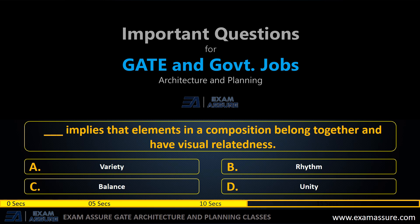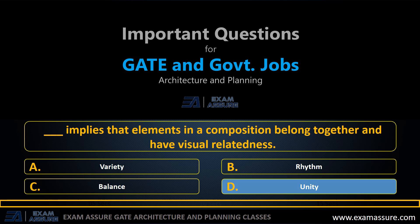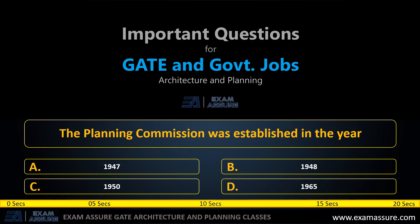Next question: What implies that elements in a composition belong together and have visual relatedness? Option A: variety, option B: rhythm, option C: balance, option D: unity. The correct answer is option D, unity.